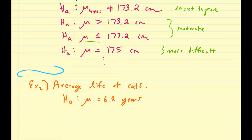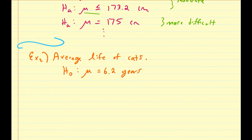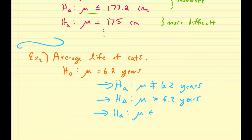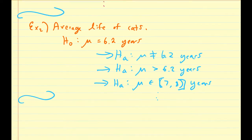What are some alternative hypotheses you could test against this null? The easiest alternative would be: I don't think you're right — the average life is not equal to 6.2 years. Another alternative would be: I think the average life of cats is going to be larger than 6.2 years. Yet another alternative could be: I actually believe the mean is somewhere in between 7 and 8 years, potentially including those boundaries. These would be some possible alternative hypotheses for this null hypothesis.